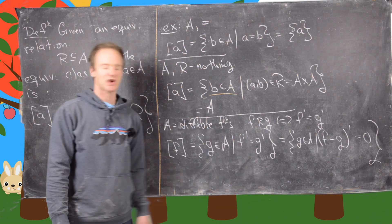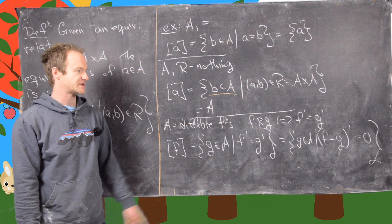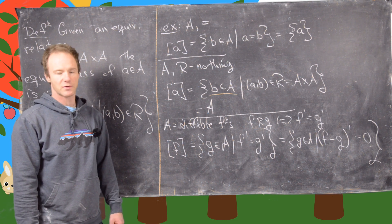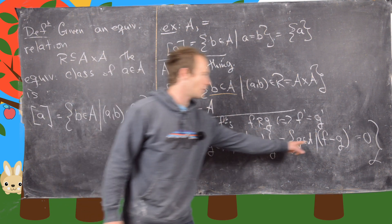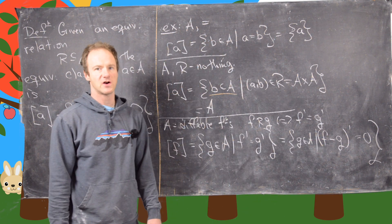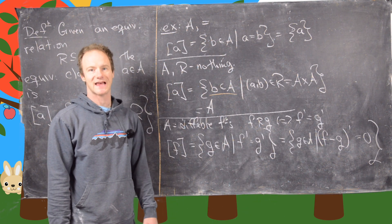So what did I do? I subtracted G prime from both sides and then I used the sum rule for the derivative to bring the prime out of the sum. Good.